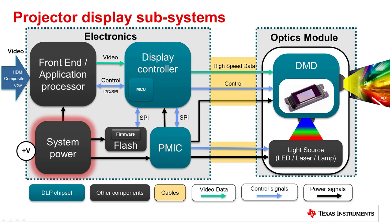System power is responsible for power distribution across the entire projection subsystem. DLP chipsets also contain a PMIC device that powers the display controller and the optical module.